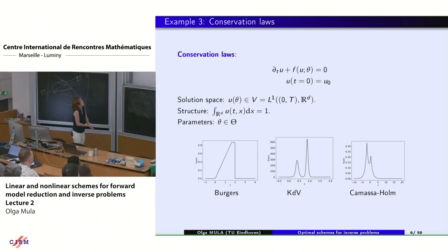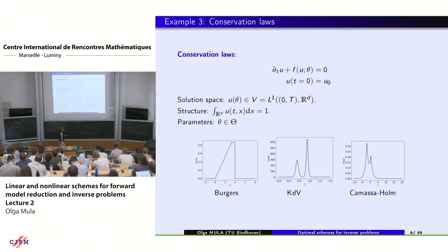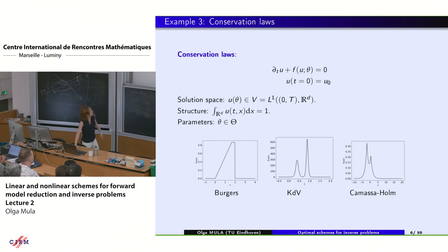The third example is conservation laws, where the solution U evolves in time following a flow F. Solutions are often in L1 and preserve mass, so their integral in space equals one. Many examples belong to this class: Burgers equations, KDV equations, the Camassa-Holm equation. Computing these solutions accurately with reduced complexity is a modern question in model reduction, and the picture is not yet clear.